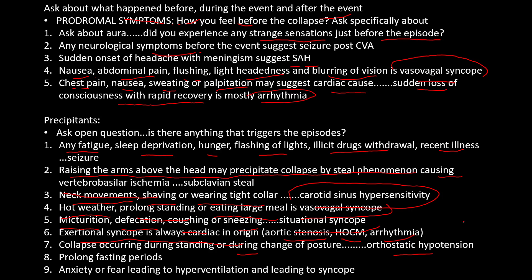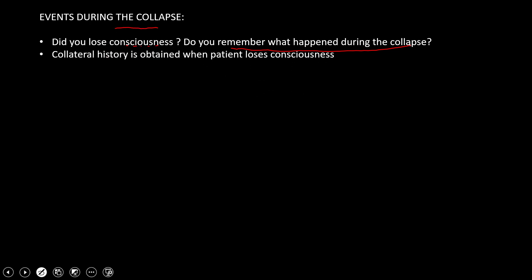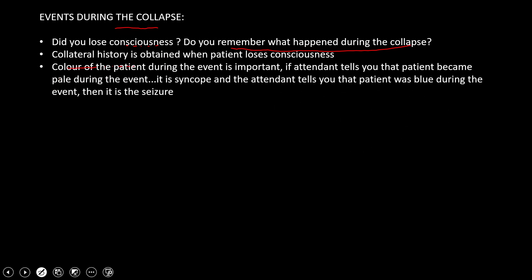After asking about prodromal symptoms and precipitants, we move to events during the episode — what happened when the patient collapsed. We ask: did you lose consciousness, and do you remember what happened? If the patient lost consciousness, collateral history from a witness is important. If the attendant reports the patient became pale during the collapse, it is mostly syncope; if the patient turned blue, it is likely a seizure.